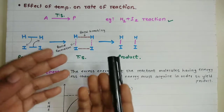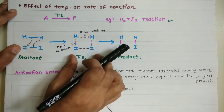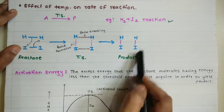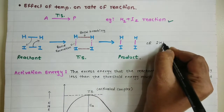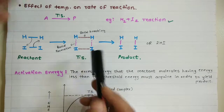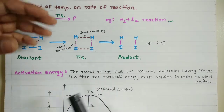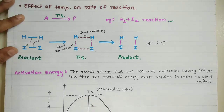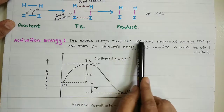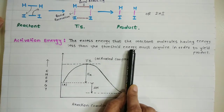The activated complex, also called the transition state, has a very short lifetime and is highly unstable. It immediately decomposes, and after decomposition, the bond formation takes place and we get the product — two HI molecules. So the whole reaction goes from reactant to product via the transition state, through bond breaking and bond formation. This energy barrier is called activation energy.